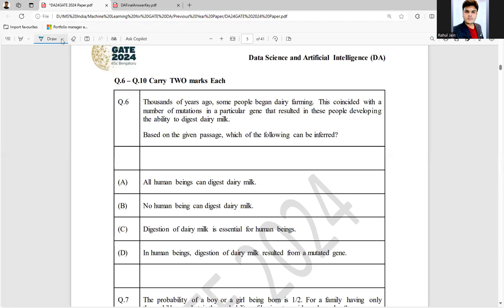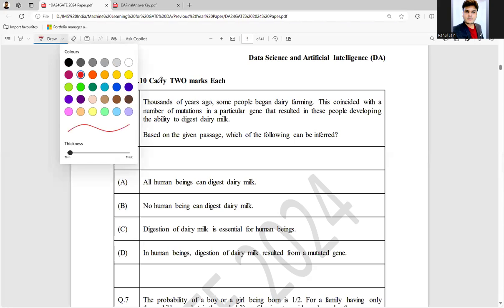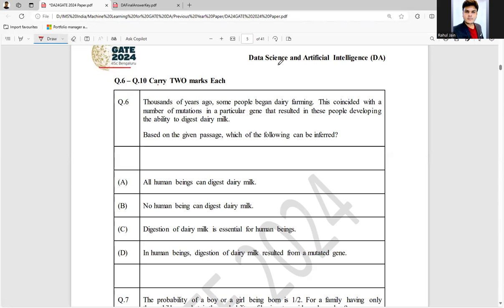Hello everyone, I hope you all are doing very well. The following question was asked in GATE DA 2024 for two marks. The question is as follows: Thousands of years ago, some people began dairy farming. This coincided with a number of mutations in a particular gene that resulted in these people developing the ability to digest dairy milk. Based on the given passage, which of the following can be inferred?